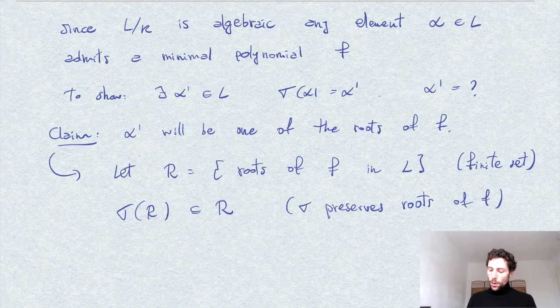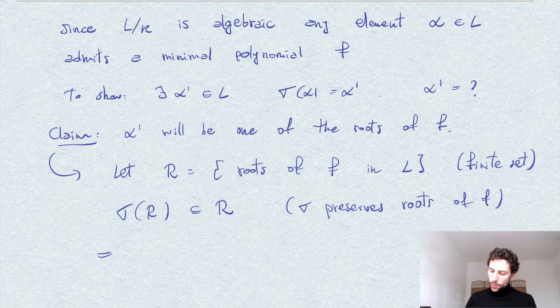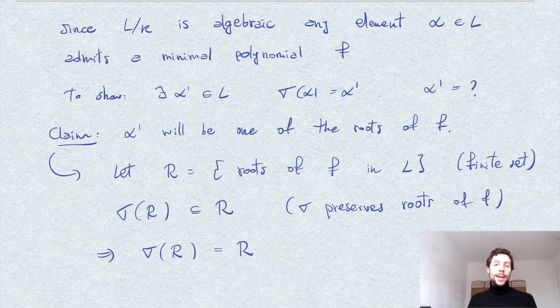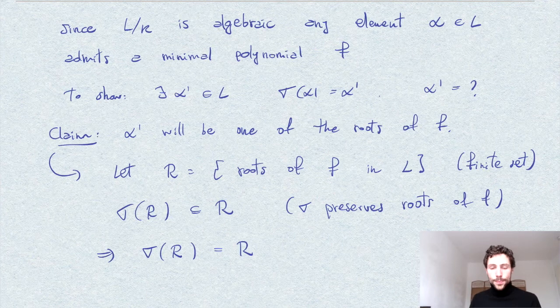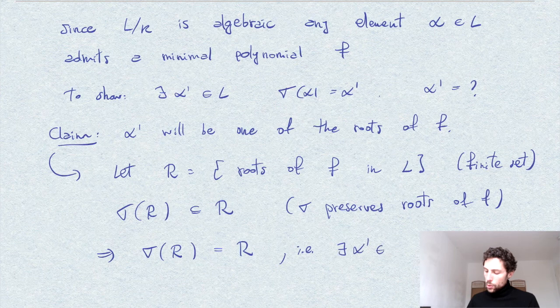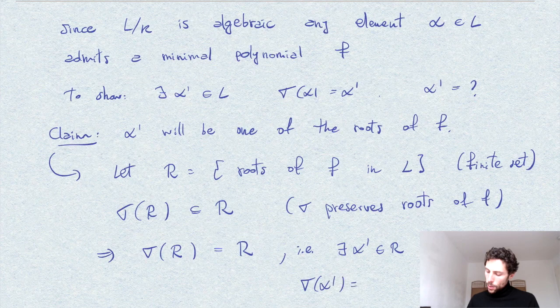So we have a finite set and therefore injective also means surjective, so we have sigma of R is equal to R. In other words, sigma acts as a permutation on the set R. And in particular, we get what we wanted, that there exists alpha prime, which would be in R, such that sigma of alpha prime is equal to alpha, which is what we wanted to show.